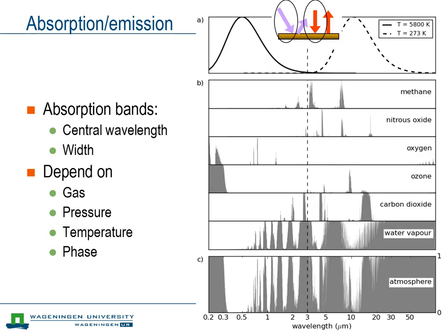We treat absorption and emission together because, according to Kirchhoff's law, the absorptivity of an object is equal to its emissivity at a certain wavelength. So if we look at the atmosphere, the ability of a certain gas in the atmosphere to absorb radiation of a given wavelength is equal to its ability to emit that radiation. Absorption and emission happen at very specific wavelengths, and the location and width of these absorption and emission bands depend on the molecule you are considering, its phase, as well as the temperature and pressure at the location where absorption or emission takes place.